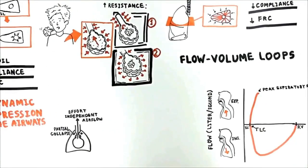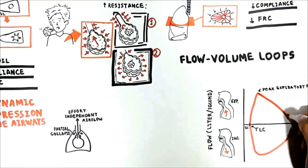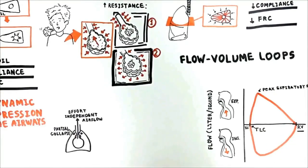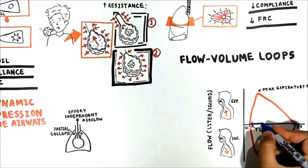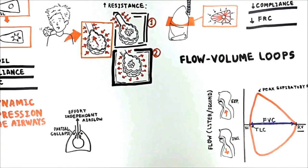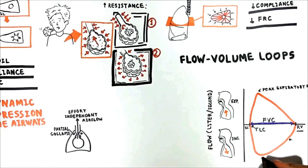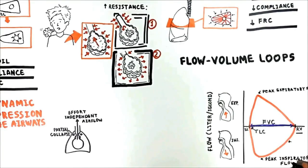When you reach the peak expiratory flow, flow begins dramatically falling and you reach the residual volume. The volume from total lung capacity to residual volume is the FVC. The inspiration loop is less clinically important, but this is how the person inspires back to total lung capacity, reaching the peak inspiratory flow.